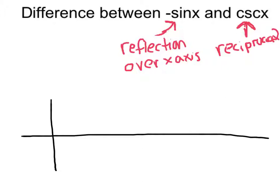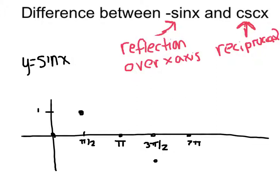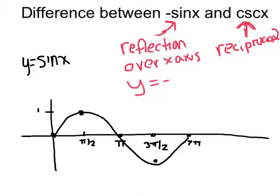One thing that students commonly get mixed up is the difference between negative sine x and cosecant. So I'm going to start with my black graph being y equals sine x. The sine function is 0 at 0, it's 1 at 90, it's 0 at 180, it's negative 1 at 270, and it's 0 at 360. My black graph represents the sine function. If I were to then graph y equals negative sine x, this function would just take all of those points and reflect them over the x-axis — the negative sine graph looks like the sine graph upside down.